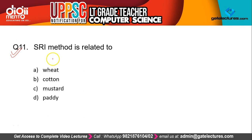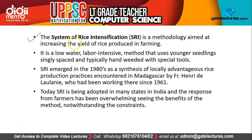Question 11: The SRI method is related to which of the following? The correct answer is D — Paddy, or in Hindi, Dhan. SRI method is related to paddy cultivation. It is a low water, labor-intensive method that uses younger seedlings singly spaced and typically hand-weeded with special tools.